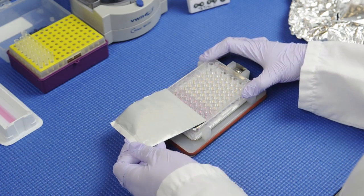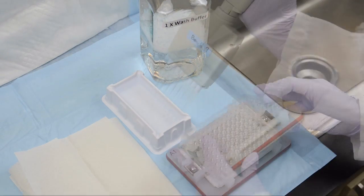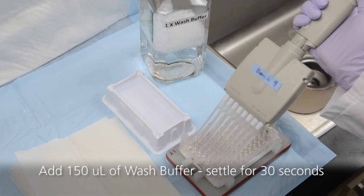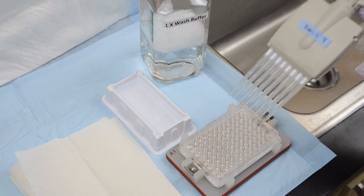Remove the plate seal and quickly invert the plate into the sink to remove the solution in the wells. Pipet 150 microliters of wash buffer into each well and allow the beads to settle to the bottom of the plate for 30 seconds.